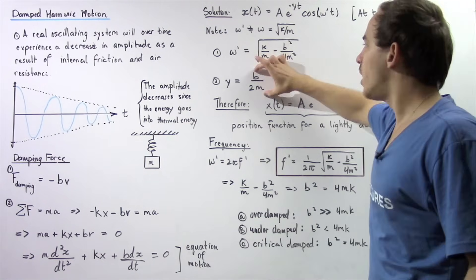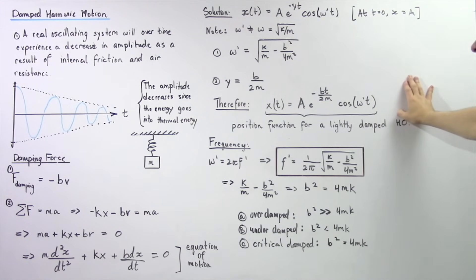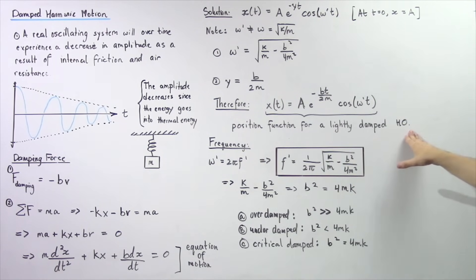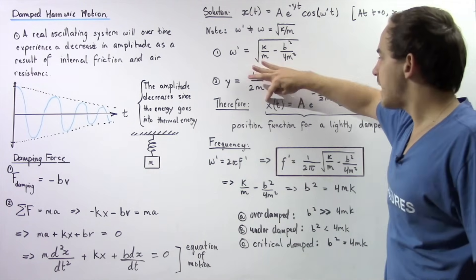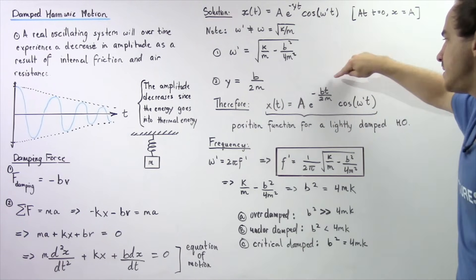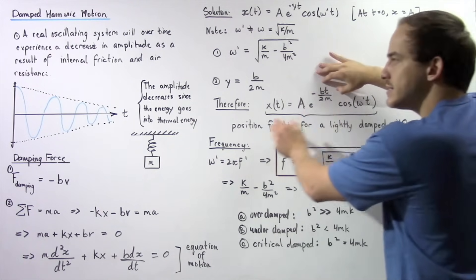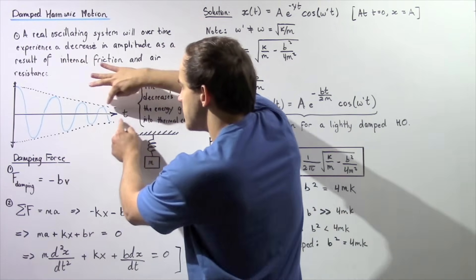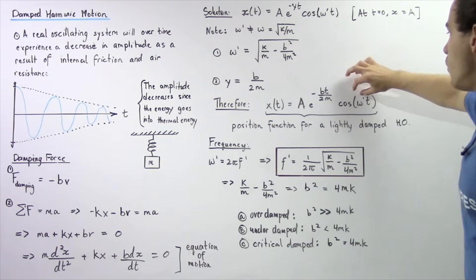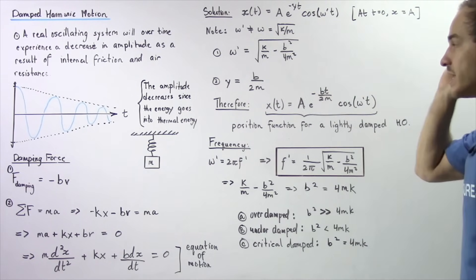Substituting gamma into the general solution, we get the position function for a lightly damped harmonic oscillating object: x of t equals the amplitude A multiplied by e to the negative bt divided by 2m — where this exponential is the dashed envelope line — multiplied by cosine of omega prime times t, where omega prime equals the square root of k divided by m minus b squared divided by 4m squared.